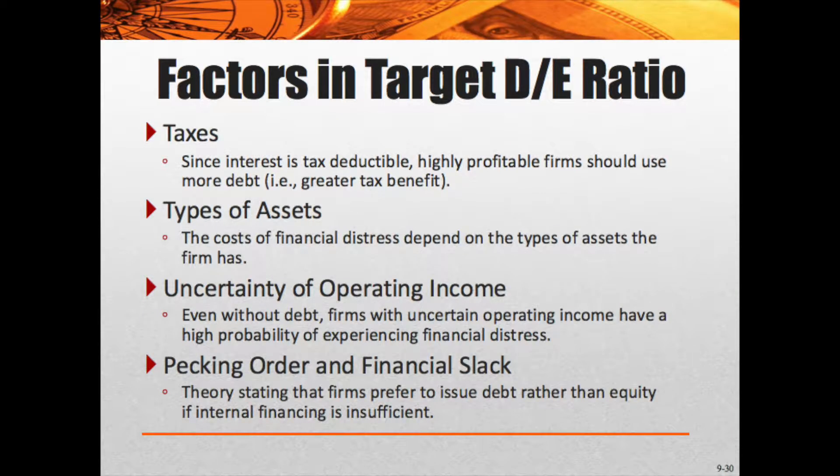Uncertainty of operating income is another factor. Even without debt, firms with uncertain operating income have a higher probability of experiencing financial distress. For example, a utility like PG&E — Pacific Gas & Electric — can be fairly certain customers will use electricity next month. Contrast that with a car manufacturer: in a recession, car sales could fall off a cliff. There are considerably different expectations in the variability of operating income.